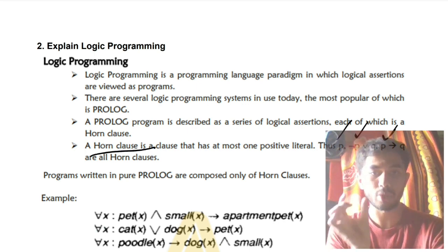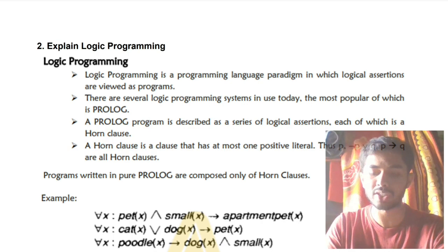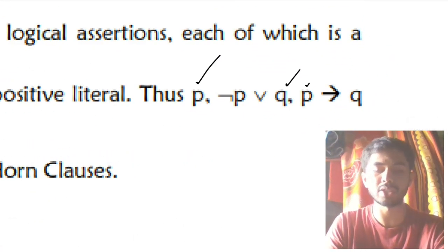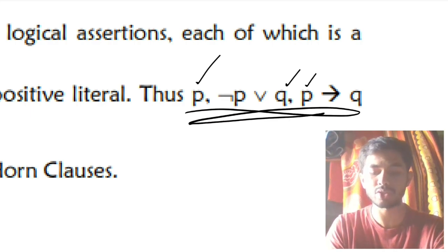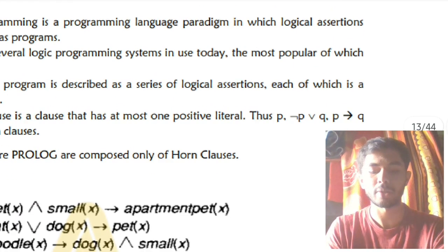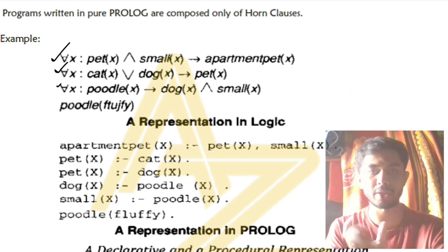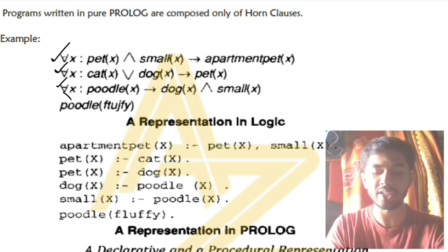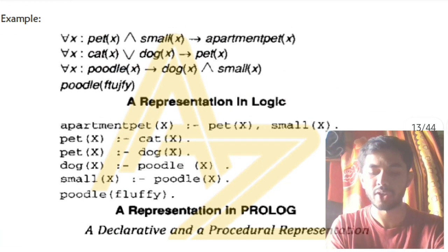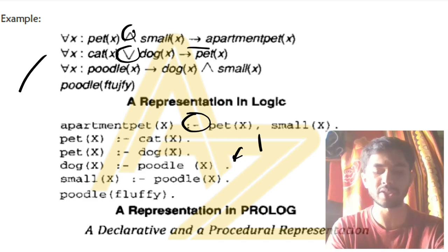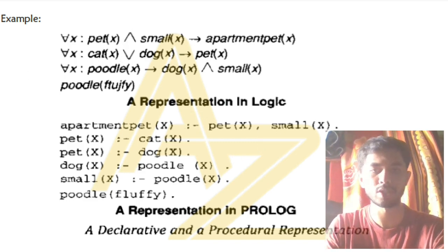One of the main things in logic programming is the Horn clause. In a Horn clause, at least one positive variable must be present in the whole equation. For example, p is positive here, q is positive here, p is positive here. For representation in Prolog form, arrows are replaced with a specific symbol, and 'or' and 'and' are represented using commas and dots. These are the key things to write for logic programming.